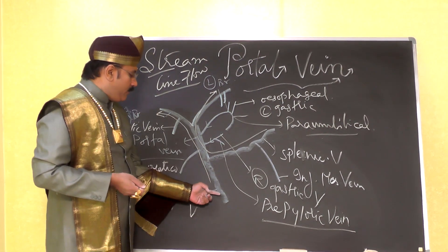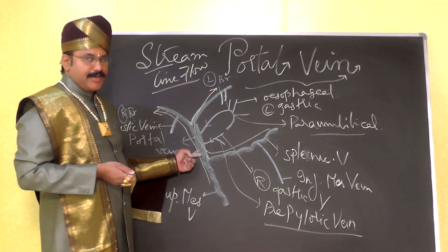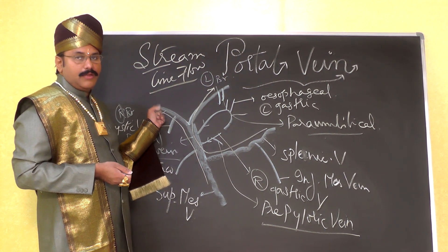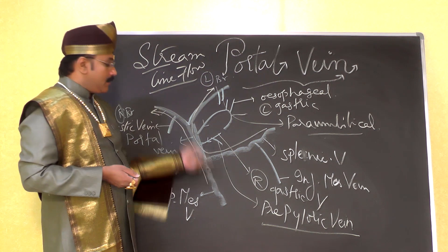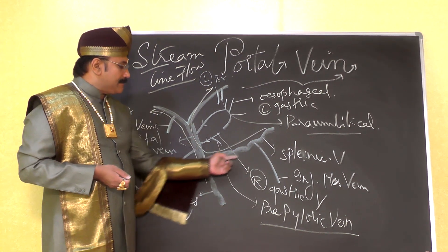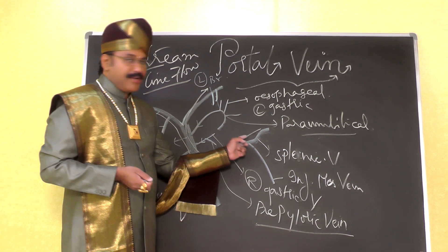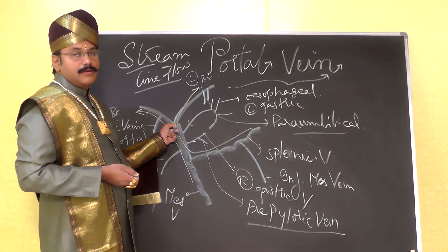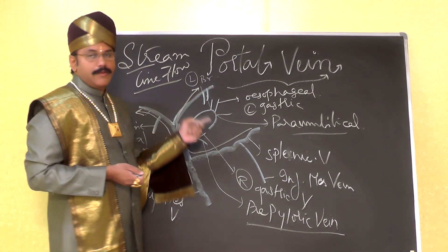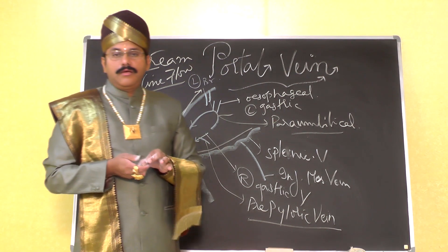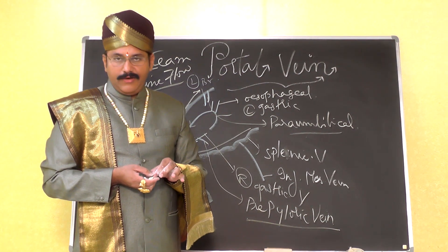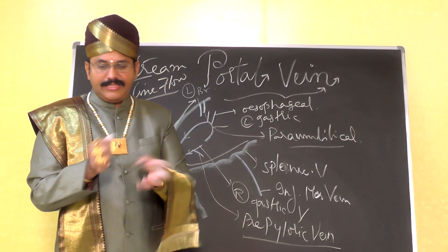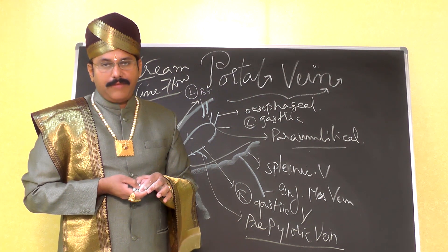The blood flowing in the superior mesenteric vein enters the portal vein, enters the right branch of the portal vein, and finally goes into the right lobe of the liver. The blood coming from the splenic vein and inferior mesenteric vein enters the portal vein, travels towards the left branch, and enters the left lobe of the liver. These two flows are separate — though they enter the portal vein, there is no intermixing. This is what we call streamline flow.